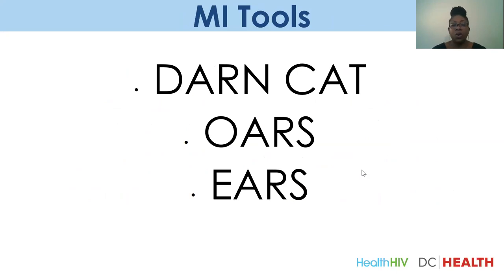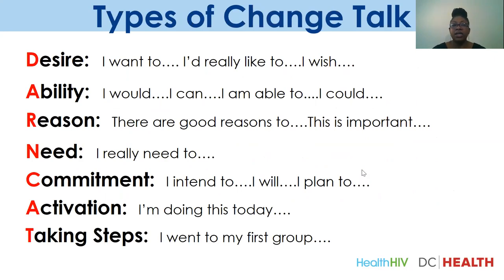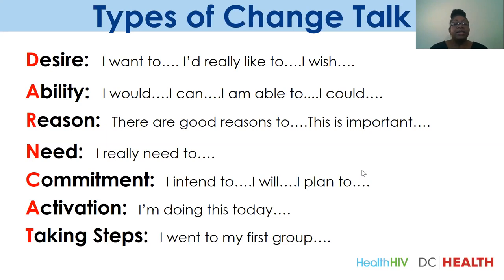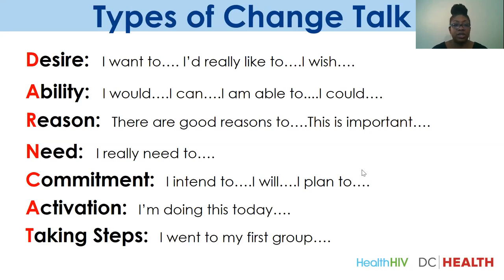We'll be talking about DARN CAT, OARS, and EARS. DARN CAT describes types of change talk you should be listening for: D — Desire ('I want to,' 'I wish'); A — Ability ('I would,' 'I could'); R — Reason ('There are good reasons to'); N — Need ('This is important because I need'); C — Commitment ('I intend to,' 'I plan to'); A — Activation ('I'm doing this today'); T — Taking Steps ('I went to my first group,' 'I walked past where I usually get my drugs'). When talking with your clients, you're listening for DARN CAT.